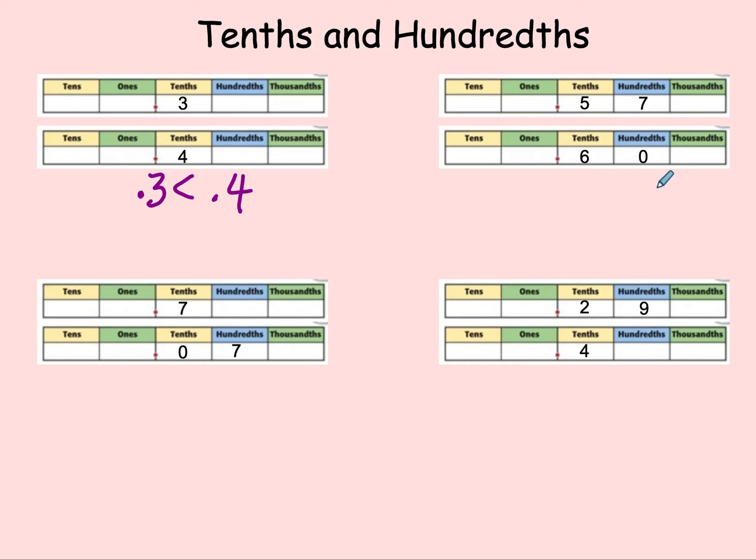On our next one, we have 60 hundredths and 57 hundredths. Well, since they are both to the same places, 57 is less than 60, so 57 hundredths is less than 60 hundredths.